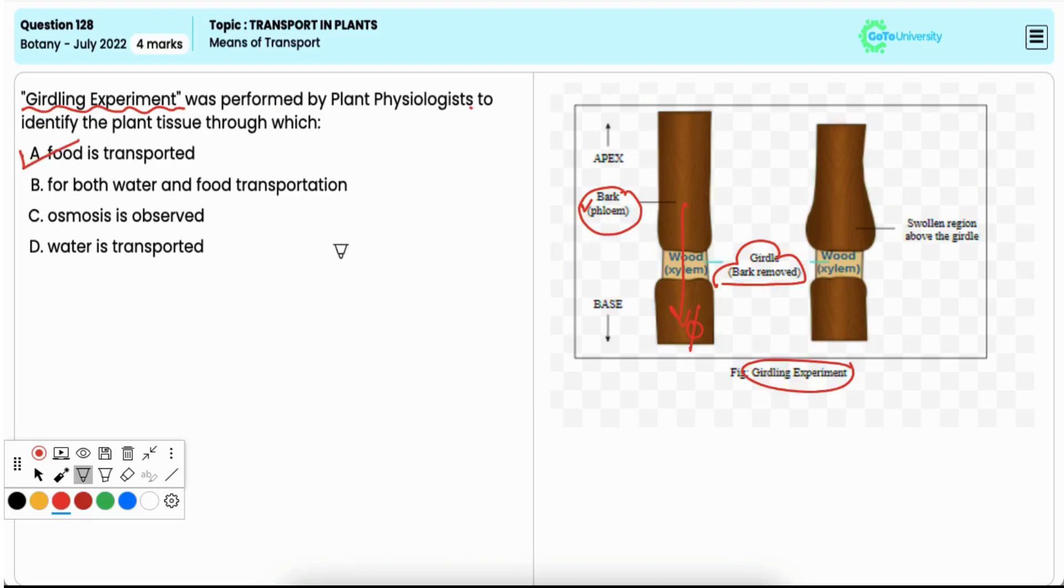Option B: for both water and food transportation. This is incorrect. The experiment does not affect water transport, which occurs through xylem.